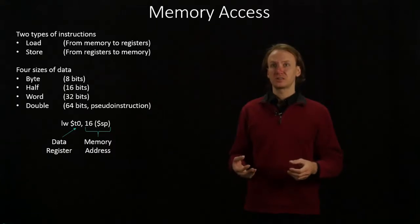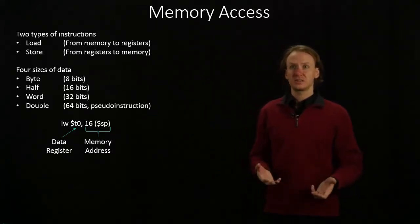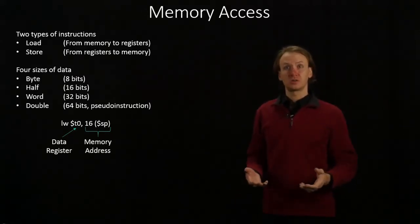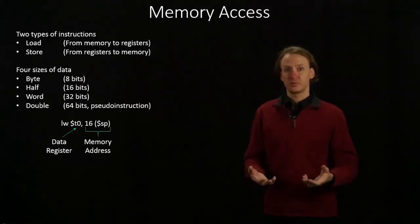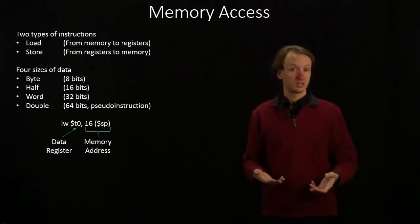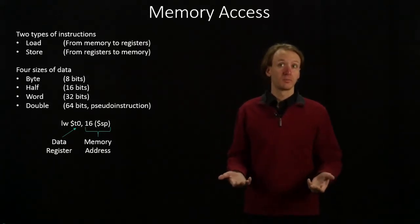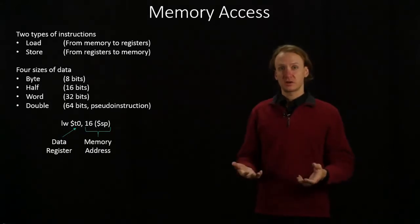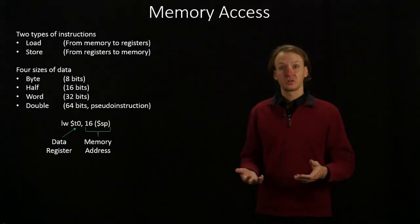One thing to keep in mind is that this terminology is specific to the MIPS architecture. In the x86 architecture, they don't have halves. A word is only 16 bits long, so a 32-bit piece of data would be considered a double word, and a 64-bit piece of data would be considered a quadruple word. So if you're going to be working with the x86 architecture, just keep that in mind — some of their nomenclature has been changed.